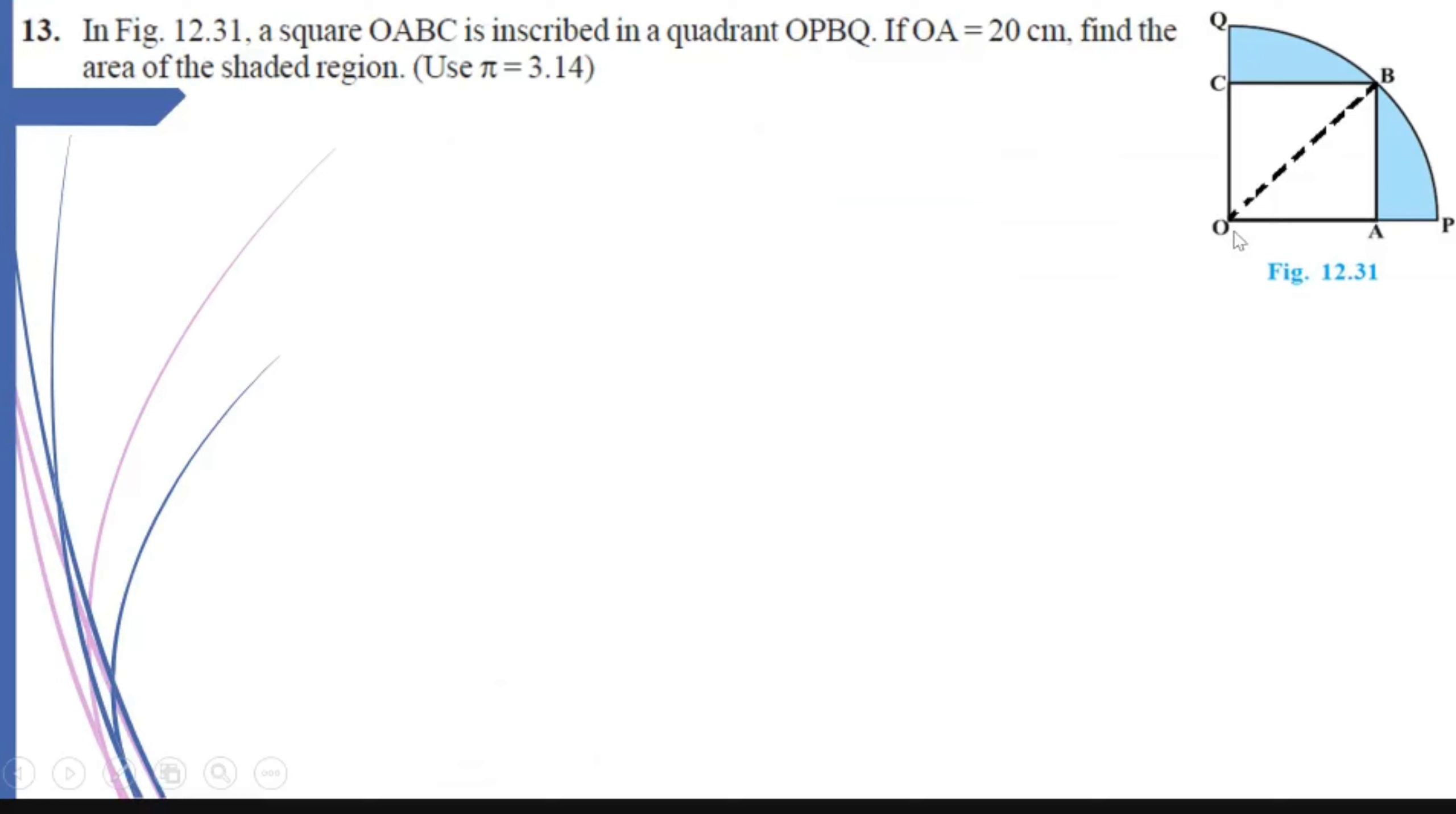Now, what is given to us? OA is equal to 20 cm. If OA is 20, then AB will also be equal to 20. And because it is a square, that means angle A will be 90 degrees.